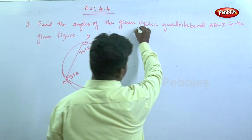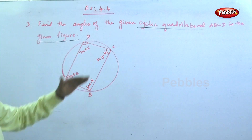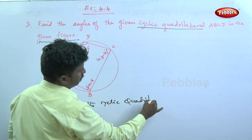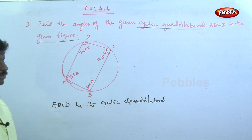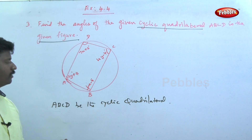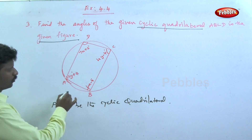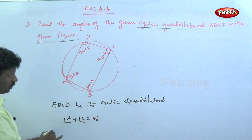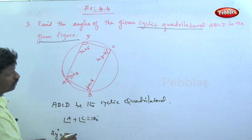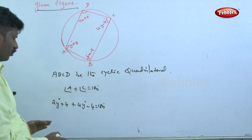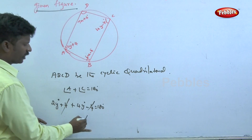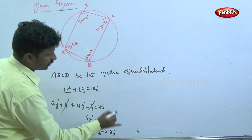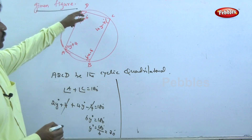Next problem: find all angles of the cyclic quadrilateral ABCD. Using the property that the sum of opposite angles in a cyclic quadrilateral equals 180 degrees: angle A plus angle C equals 180 degrees. So 2y plus (4y minus 4) equals 180 degrees. The plus 4 and minus 4 cancel, giving 6y equals 180, so y equals 30 degrees.